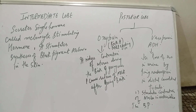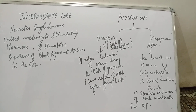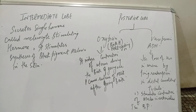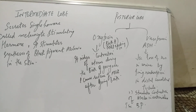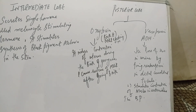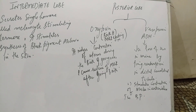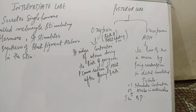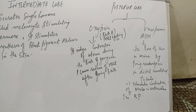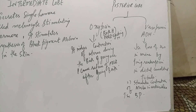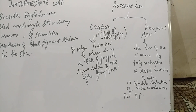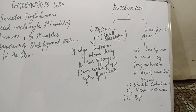Oxytocin is also known as the birth hormone or milk-ejecting hormone because it involves contraction of the uterus during the birth of young ones and causes release of milk after giving birth. Vasopressin, also known as antidiuretic hormone, decreases loss of water in urine by increasing reabsorption in the distal convoluted tubule. It also stimulates contraction of muscles in arterioles and hence increases blood pressure.